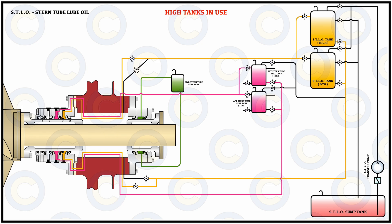Now imagine a situation where the vessel is at a higher draft — say 95–100% laden condition. The forces exerted by the water on the outside would be much higher, but if we still keep the tank selection for the aft seal on the low-header tank, water would inevitably enter the system, in small or large quantity depending on the condition of the seal and the number of hours it has been in use. For a finite ingress, the stern tube water drain tank is responsible for draining such leakages properly.